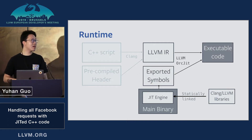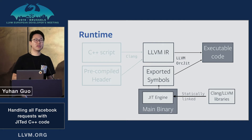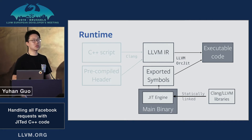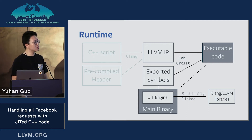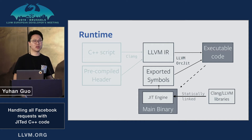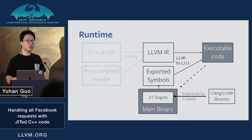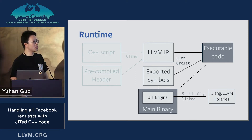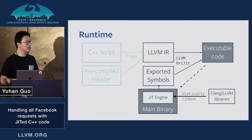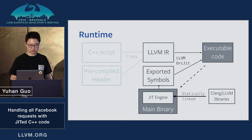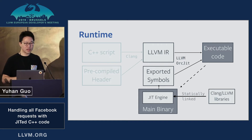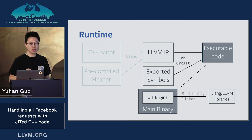Once we have the LLVM IR, the next step is to use the LLVM ORC JIT API to optimize, compile, and link it, producing final executable code and mapping that into the memory space of the main process. This gives the main binary access to all the functions defined in the script. At linking time, all the symbols we want to use are extracted from the main binary. With everything together, we are able to compile the C++ script at startup time and execute it.